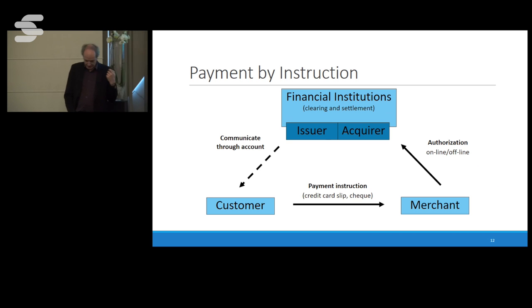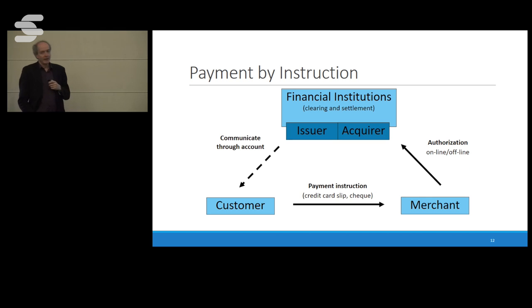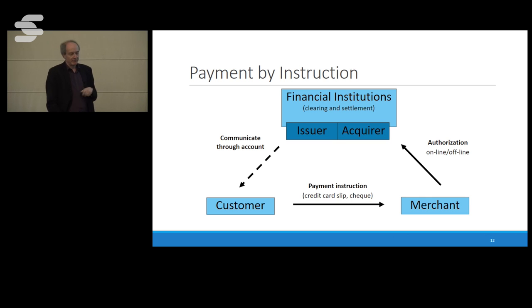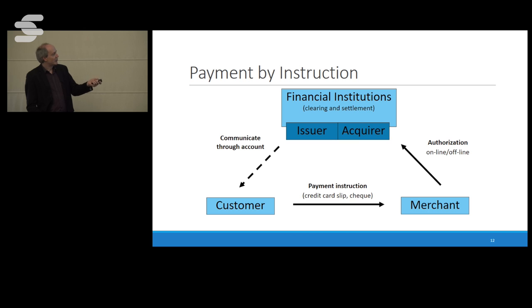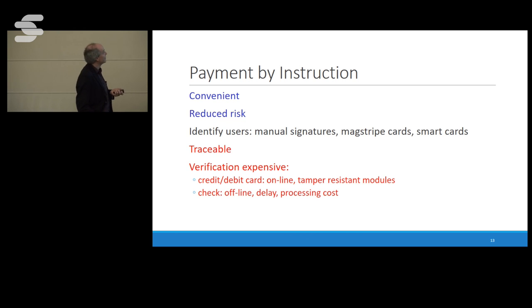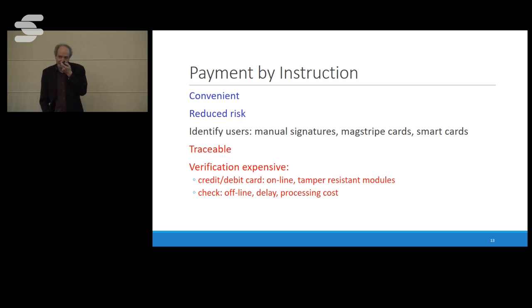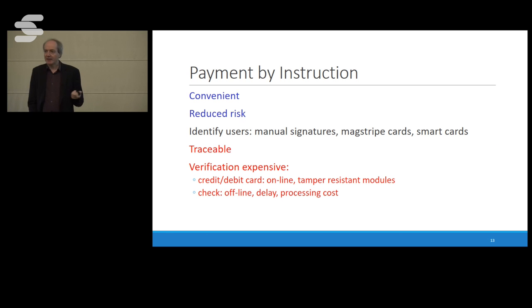So of course we want to move on. In modern times we have credit cards or checks — payment by instruction. You have a financial institution — actually a whole network with issuers and acquirers. Consumers have an account with the bank, they make a payment (say by signing a credit card slip in the old days), the slip is deposited by the merchant with the acquirer, the money flows counterclockwise, and the goods move in the other direction. You can do this remotely in principle. Verification is expensive — ask a shop owner how much he pays for all the terminals. It's a de facto monopoly and they are very expensive.